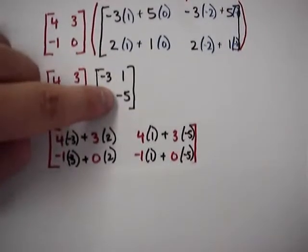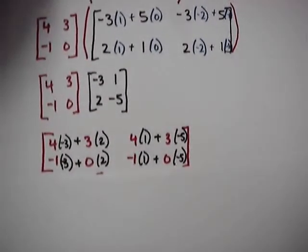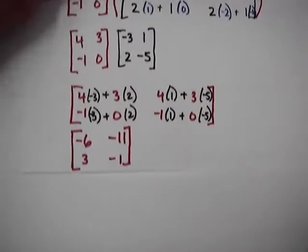This number here by the fourth column: negative 5, negative 5. And then we're going to multiply them together, and we get this.